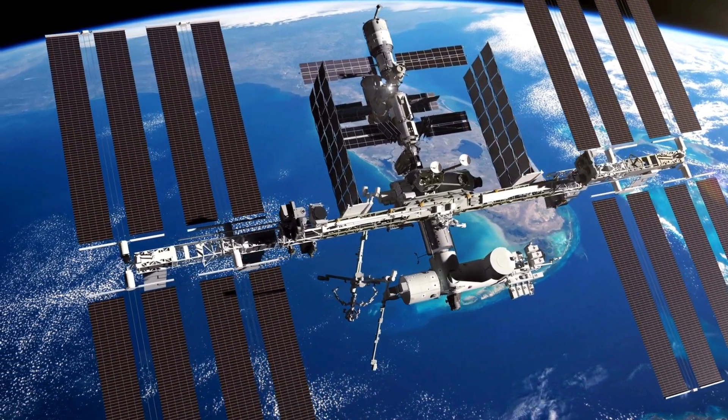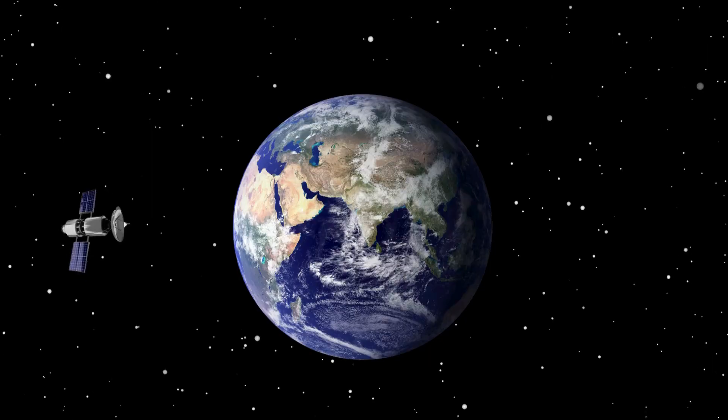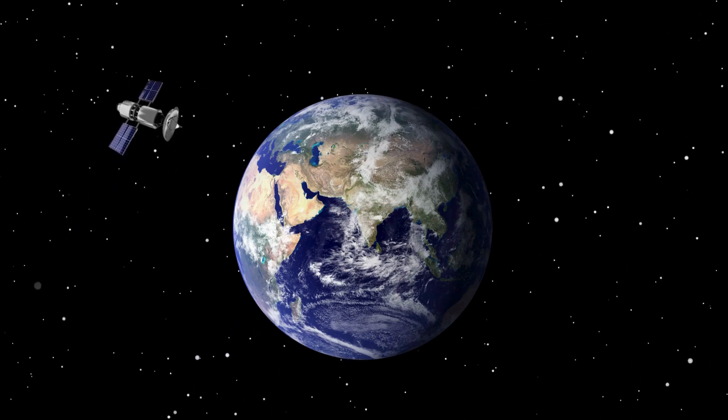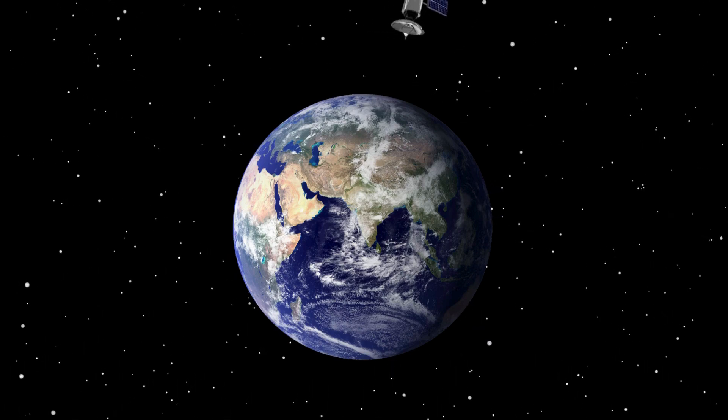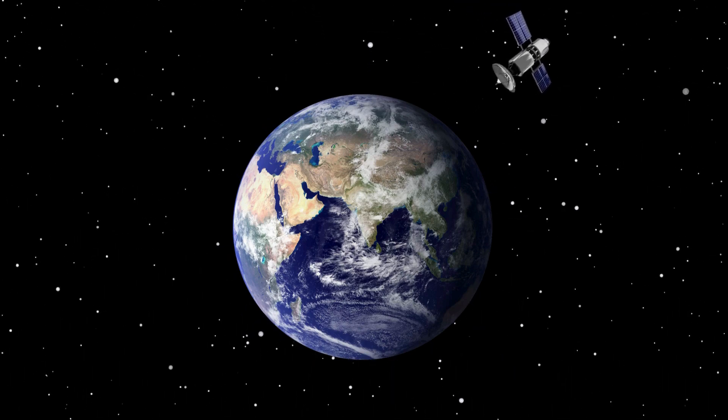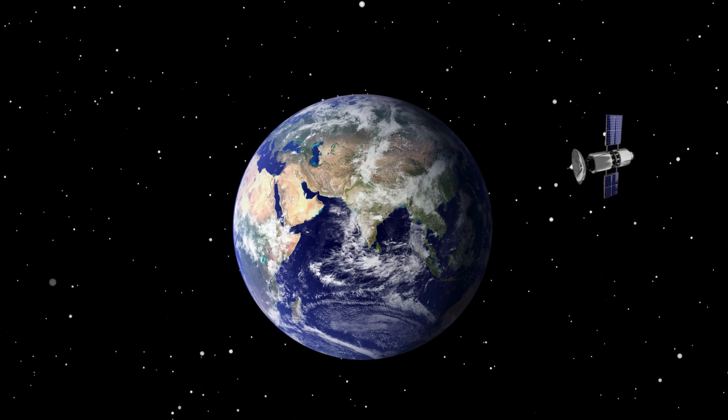So the SAA, think of it like a dent or maybe a thinner patch in Earth's magnetic shield, our natural defense against space radiation. A thinner patch. Yeah. So anything flying through gets less protection. Satellites, for instance. Precisely.